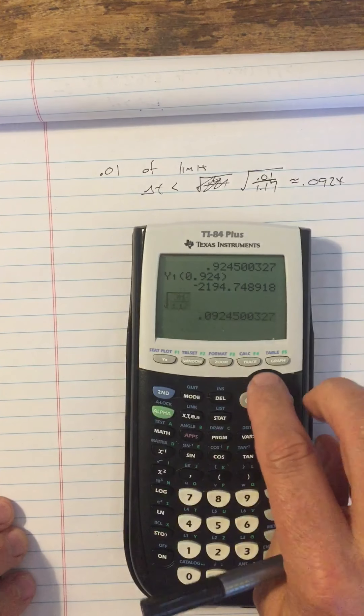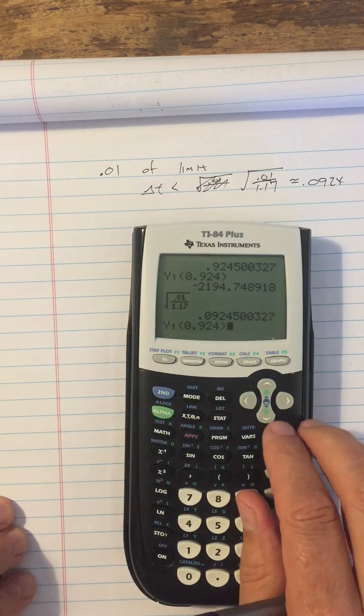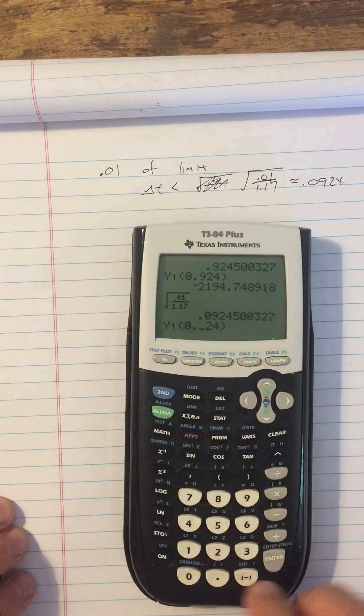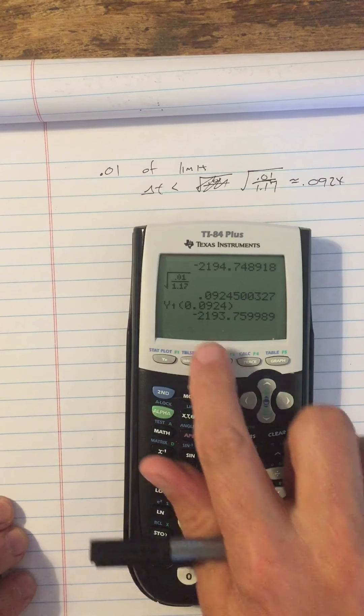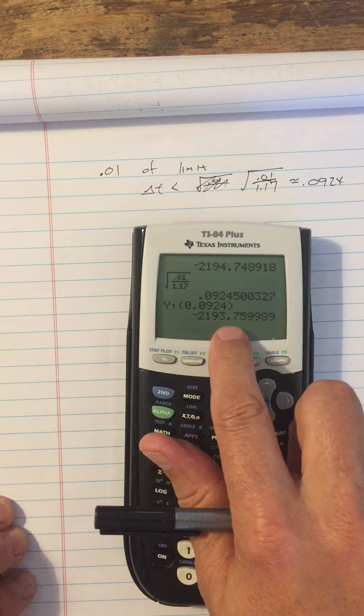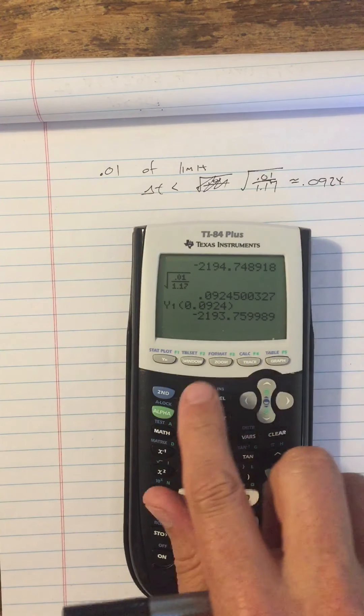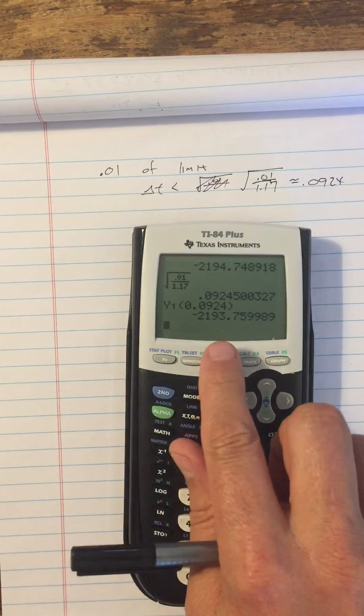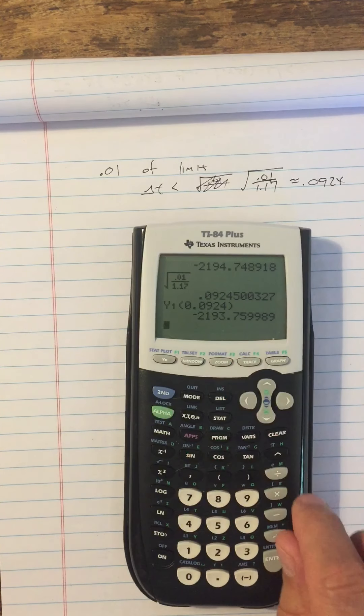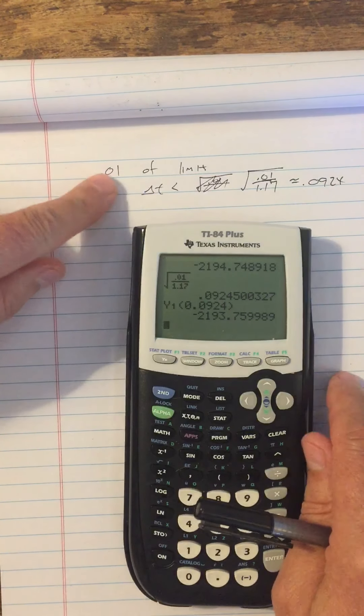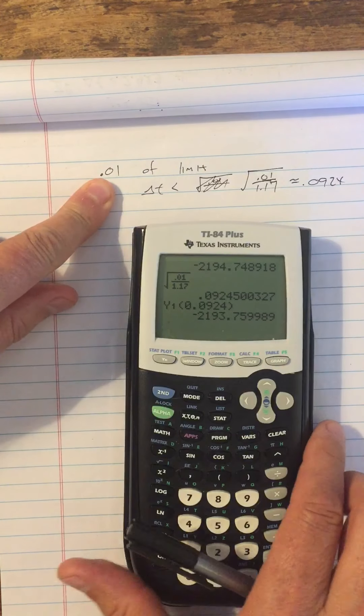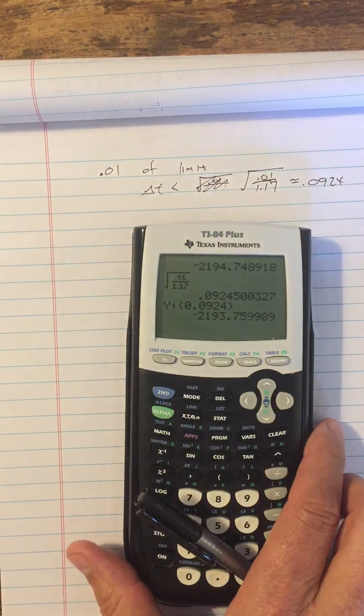So if I use delta t of 0.0924, y1 of 0.0924 now. So let's just insert a zero there. And I got negative 2193.7599. So it's really negative 2193.76. So I am in fact within 0.01 of my limit, which is negative 2193.75.